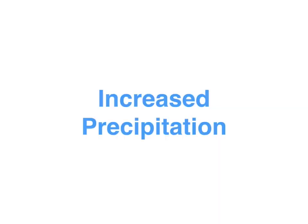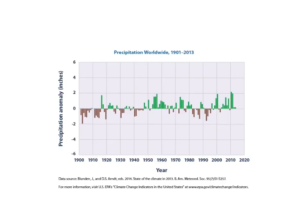Another indicator of climate change is increased precipitation — meaning an increase in rainfall throughout the world. Looking at worldwide rainfall measurement between 1901 and 2013, over these 112 years we see that starting with the 1960s, and over the last 50 years, there has been increased rainfall worldwide. This is quite interesting because it shows that precipitations are going to progressively continue to increase.